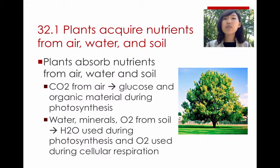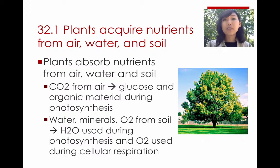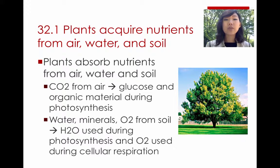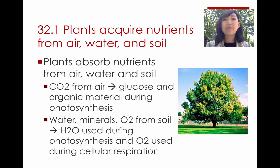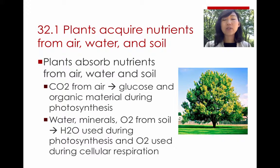From the soil, that's the main area where they obtain water, minerals, and oxygen. The water that they use during photosynthesis — they split the water molecule to get the electrons they need in order to make ATP and NADPH. O2 is used during cellular respiration, and that's the final electron receptor as electrons go through the electron transport chain to produce a lot of ATP.